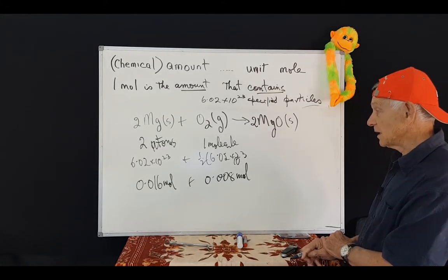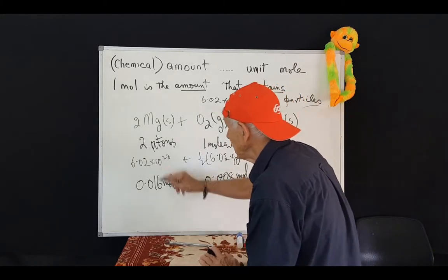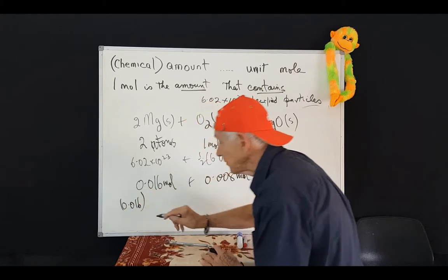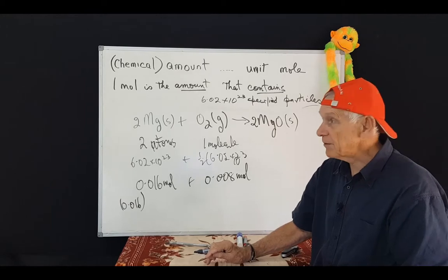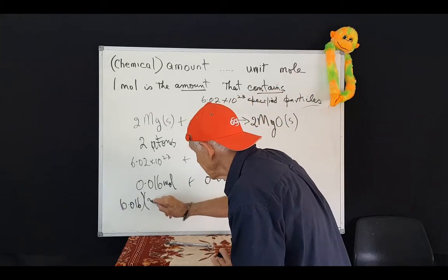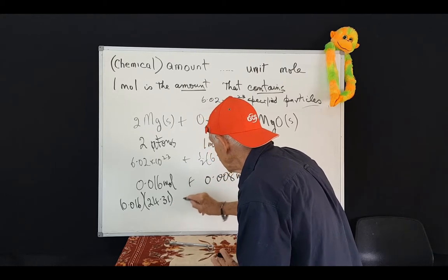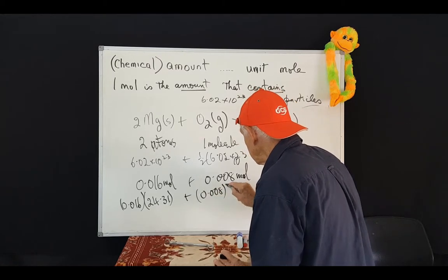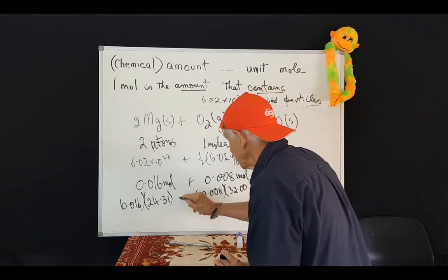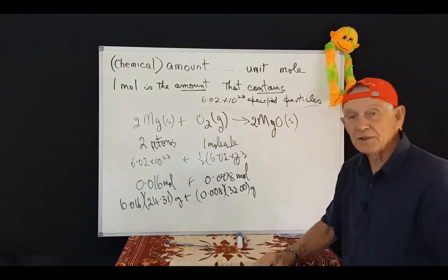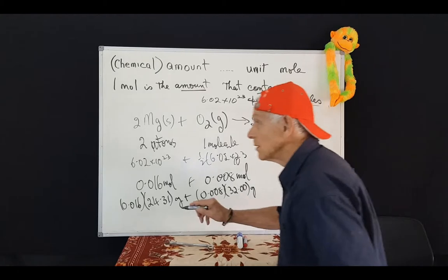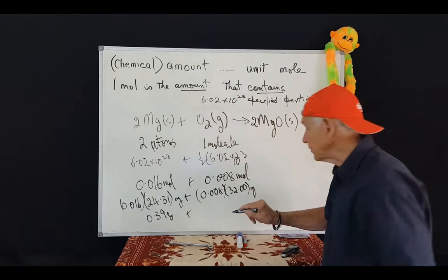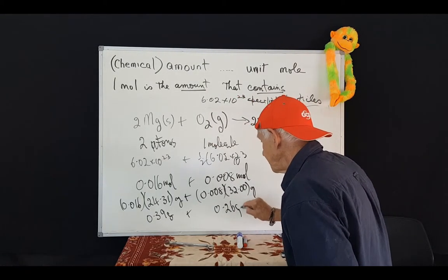To calculate what the masses are, the mass of magnesium would have to be 0.016 times its atomic weight. What's that, Prof? 24.31. We'll react with 0.008 times 32.00 grams. What are you telling me? 0.39 grams. Thanks, Prof. And 0.26 grams of this. Wow.